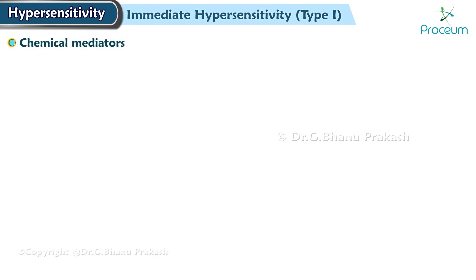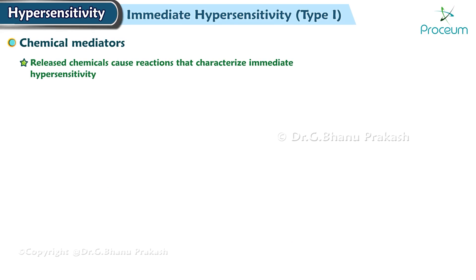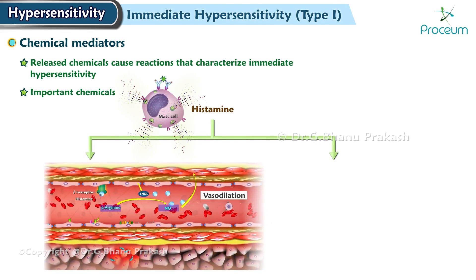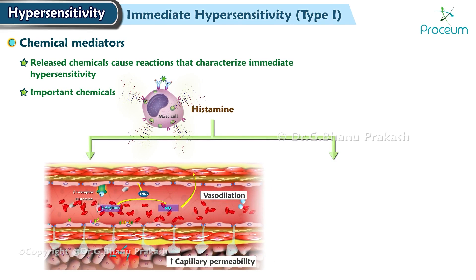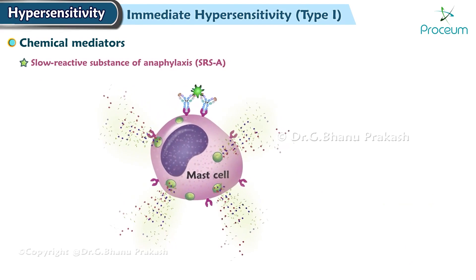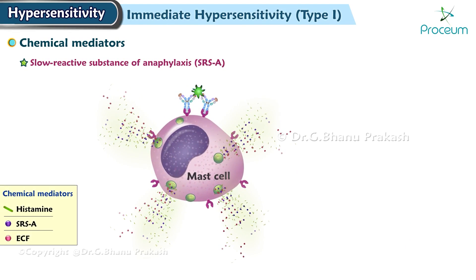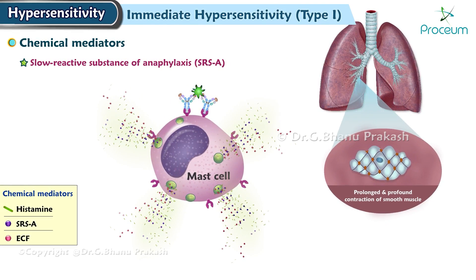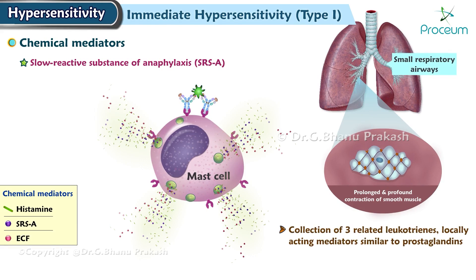Now for the chemical mediators of immediate hypersensitivity. These released chemicals cause the reactions that characterize immediate hypersensitivity. The most important chemicals released include histamine, which brings about vasodilation and increased capillary permeability, as well as increased mucus production. Also, slow reactive substance of anaphylaxis, or SRSA, which induces prolonged and profound contraction of smooth muscle, especially of the small respiratory airways. SRSA is a collection of three related leukotrienes, locally acting mediators similar to prostaglandins.